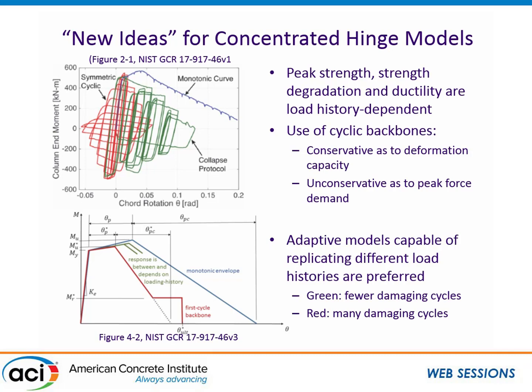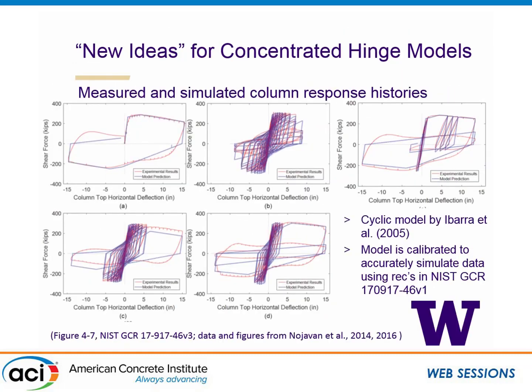If you have a cyclic load history that is not as demanding — loading in one direction without the full reverse cycle — you end up with an envelope falling somewhere between the blue and the red. The idea is that as your analysis goes on, you're monitoring energy dissipation and maximum/minimum displacement demand, so your envelope is adjusting and the rate of strength deterioration is adjusting. Using that modeling approach, you can do a really good job of simulating observed response in the laboratory.